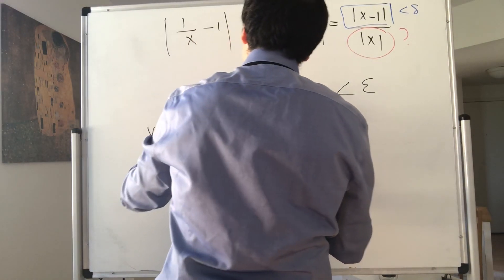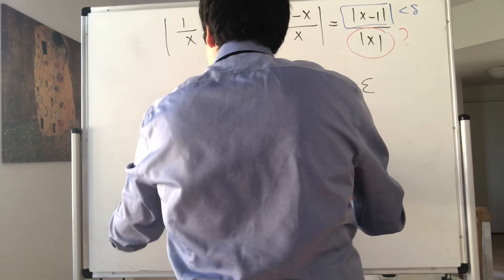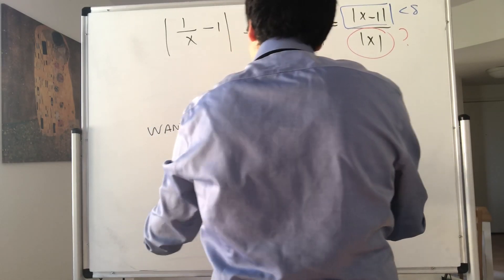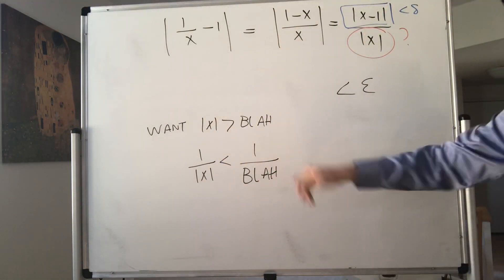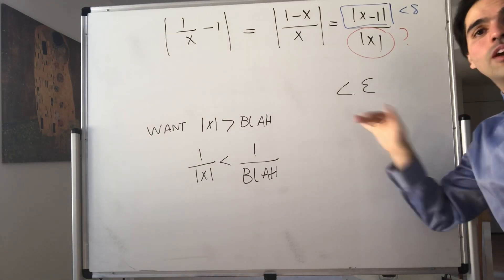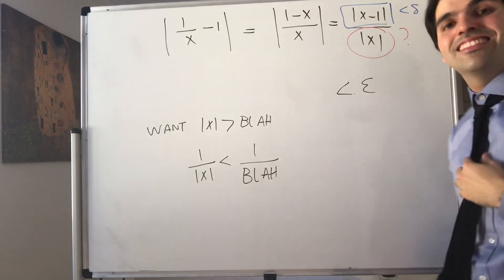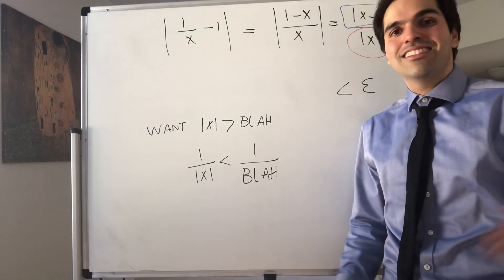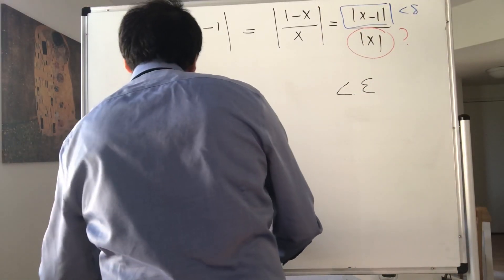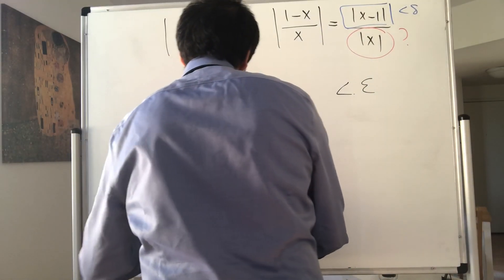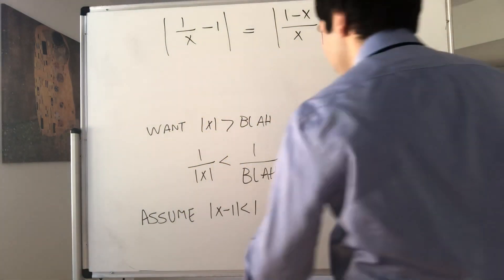We want |x| to be greater than some value — call it 'blah' — because then 1/|x| is less than 1/blah, which goes the right way. You might think: no problem, we'll just do the same thing we did for x² and x³, which is to assume that |x − 1| is less than 1.